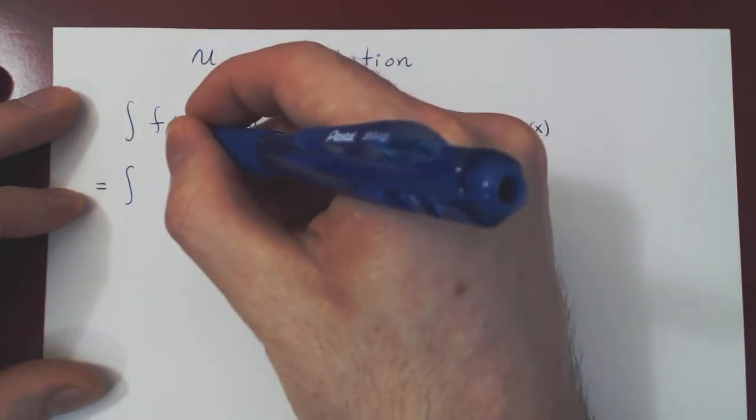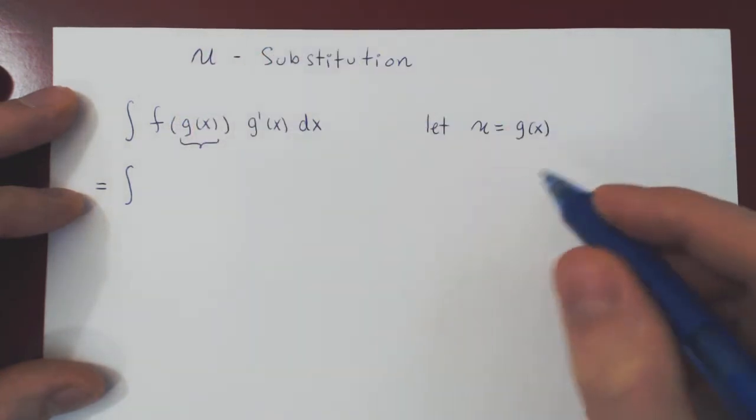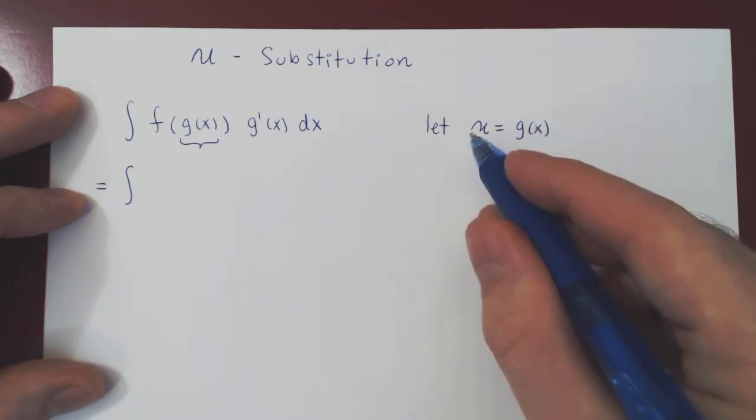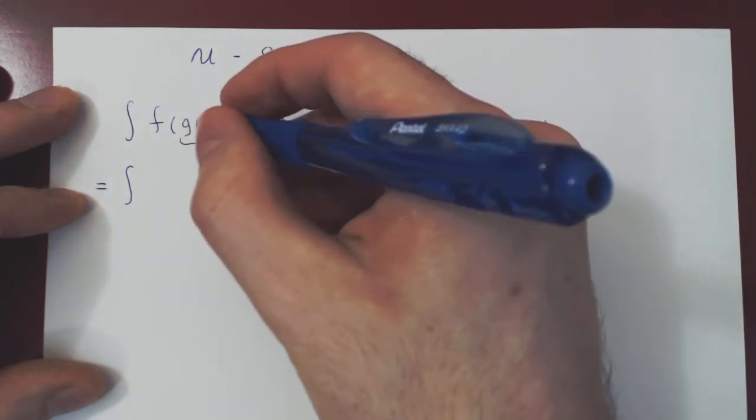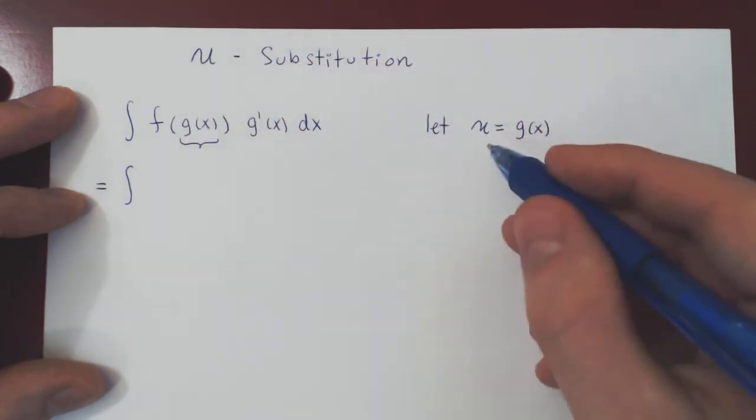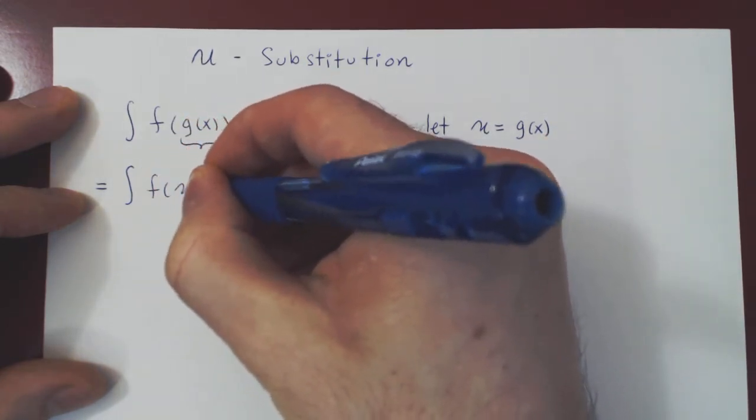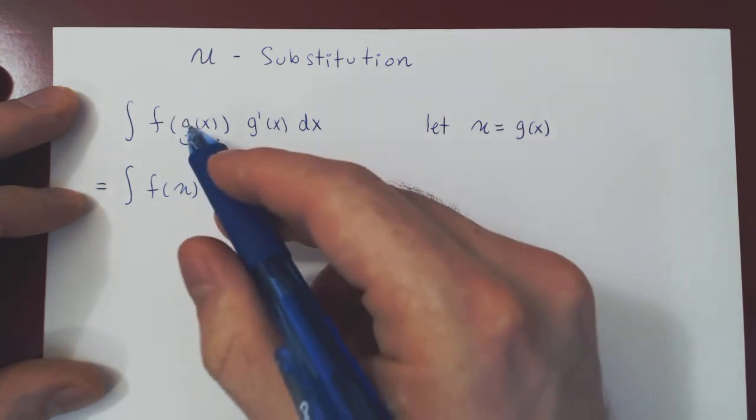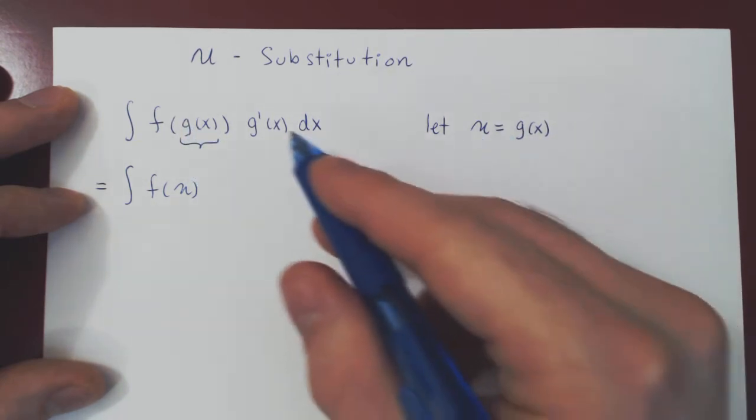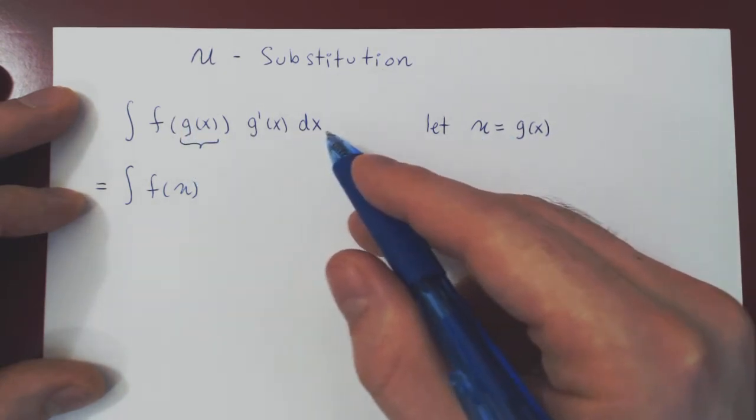but we are letting g of x be equal to u. So this will now be simply g of x equals u, so all we have is now f of u. g of x is replaced by u. And now we're left with, well, what about g prime of x dx?